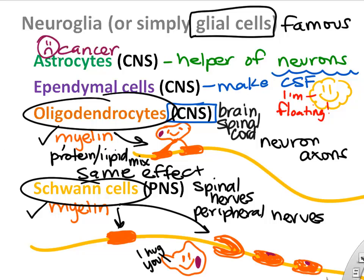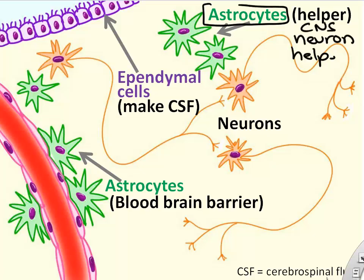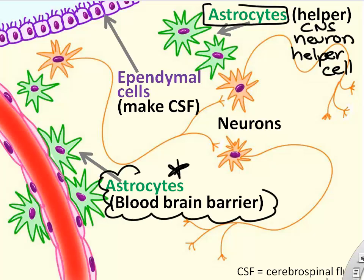Sometimes these support cells can cause cancers — for example, glioblastoma is an astrocyte-derived cancer. Astrocytes are one of the more famous helper cells.